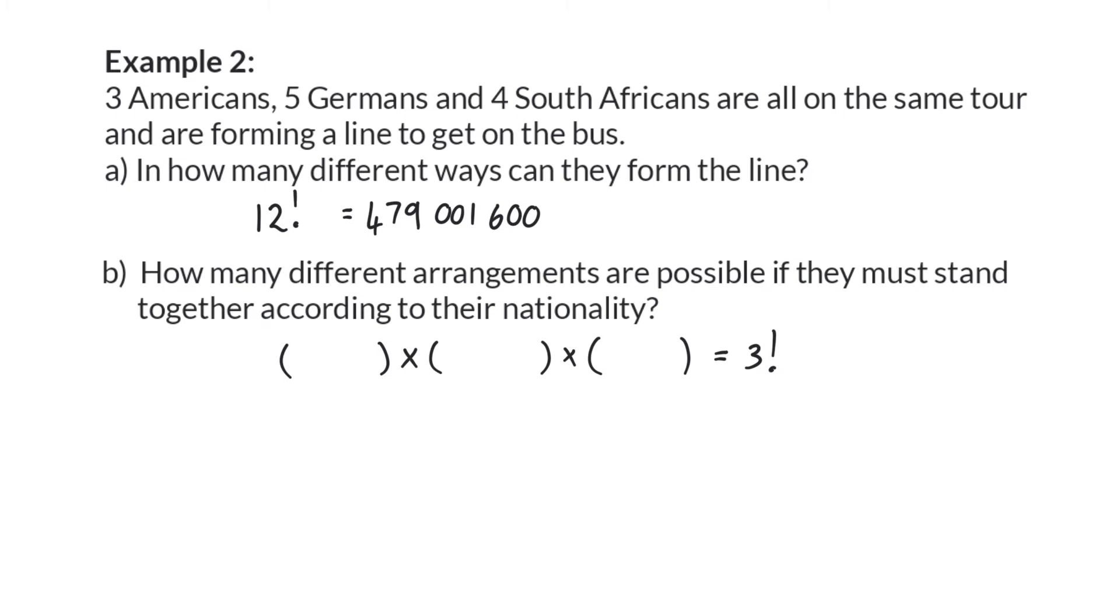The first nationality will then be the three Americans which can be arranged in 3 factorial different ways. The next group consists of five Germans arranged in 5 factorial ways. And lastly the four South Africans can be arranged in 4 factorial ways.